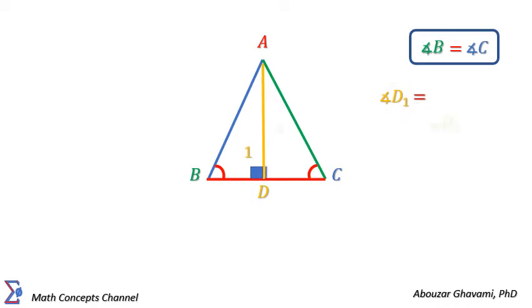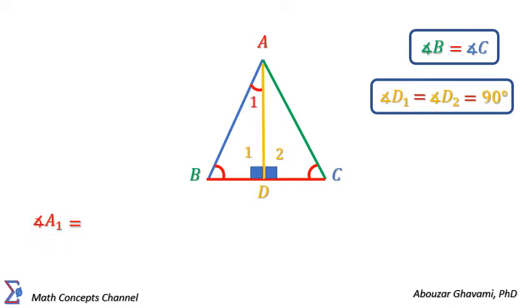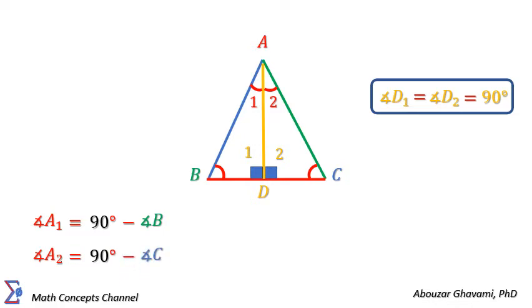Angle D1 is equal to angle D2 is equal to 90 degrees. Angle A1 is equal to 90 degrees minus angle B. Angle A2 is equal to 90 degrees minus angle C. Angle B is equal to angle C.